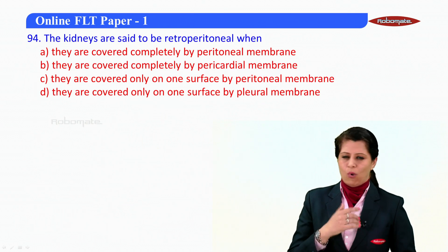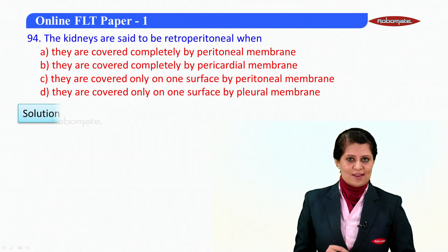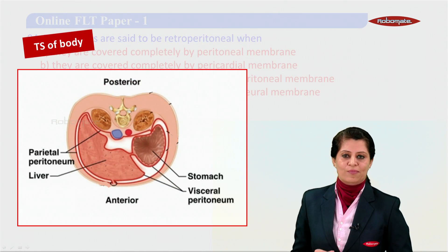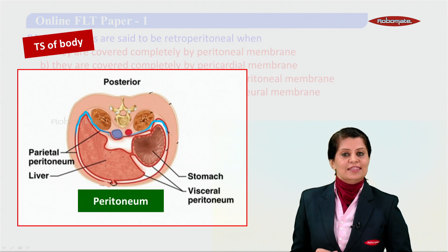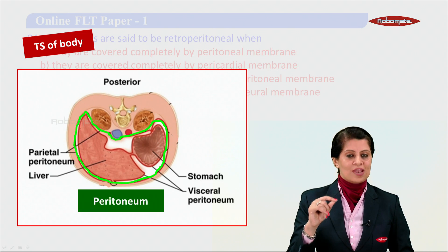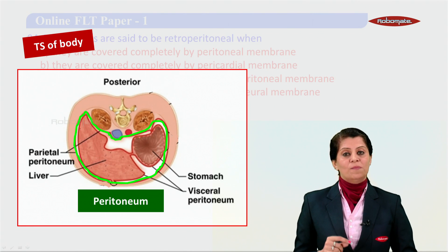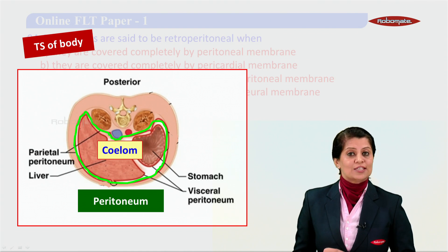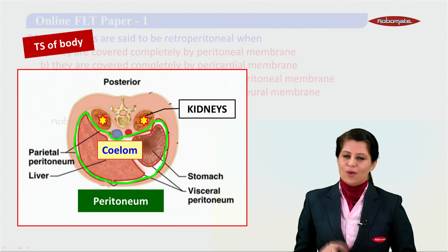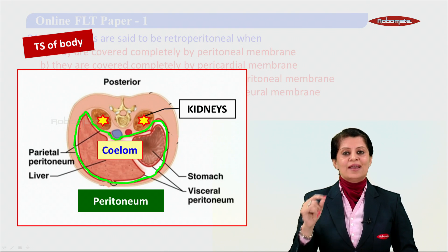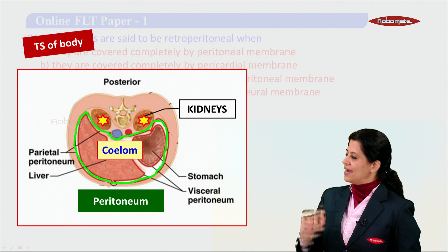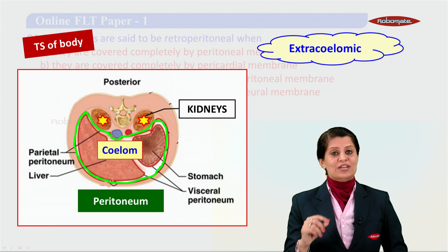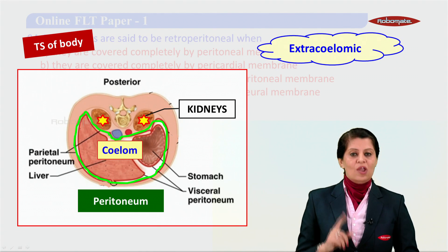The kidneys are said to be retroperitoneal. This picture shows the transverse section of the human body passing through the abdominal area. There is a membrane called the peritoneum — a very important serous membrane. The cavity inside the peritoneum is called the coelom. Now observe the kidneys: are they inside the coelom or outside? The kidneys are outside the coelom — we call this extracoelomic.